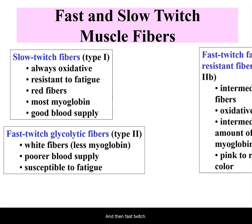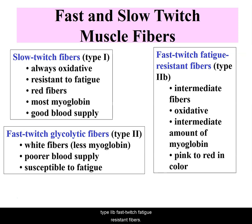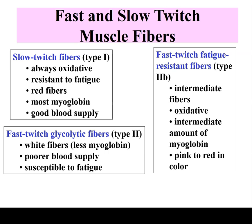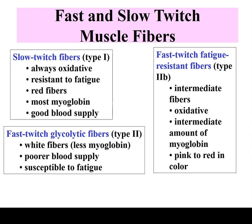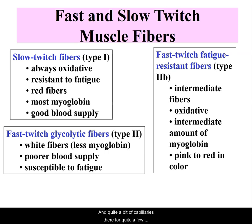Fast twitch type 2b fibers are fatigue-resistant intermediate fibers. They are oxidative with an intermediate amount of myoglobin, pink to red in color. They are fast oxidative fibers — not as fast as slow twitch but intermediate. They are aerobic and fatigue resistant, though not as much as slow twitch, with quite a bit of myoglobin, quite a few capillaries, quite a few mitochondria, and an intermediate amount of glycogen.